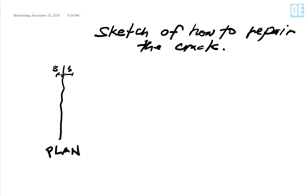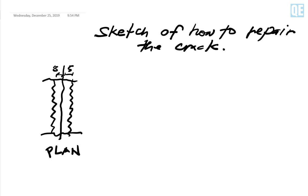Five centimeters from the crack on one side, and also five centimeters on the other side. To cut this, you have to make a zigzag pattern - make sure it's a zigzag on the actual wall. This is just a presentation. This is the plaster and this is the cut portion.